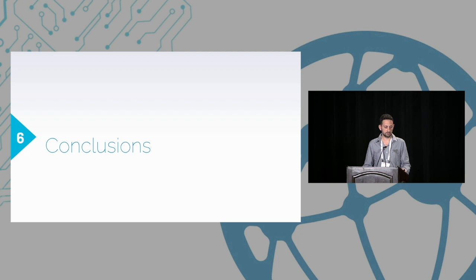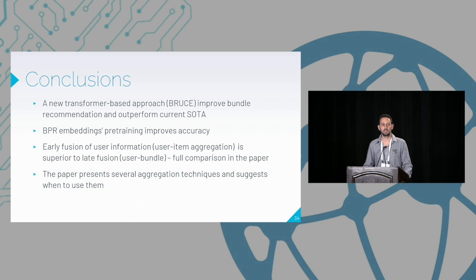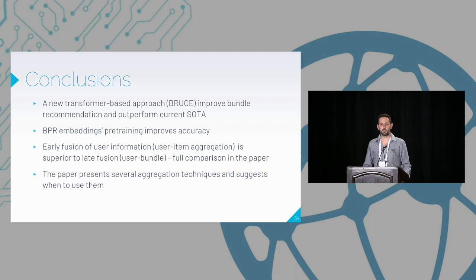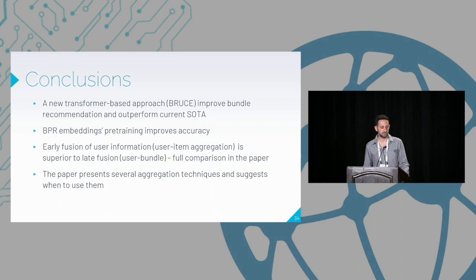To conclude, we suggest a new transformer-based approach for addressing the ranking problem for bundle recommendation. We use BPR embeddings and found them very useful for improving model accuracy. We use both early fusion and late fusion to understand user preferences, and found that early fusion performs better than late fusion. The paper suggests several different architectures and aggregation techniques — I invite you to read it for full details.